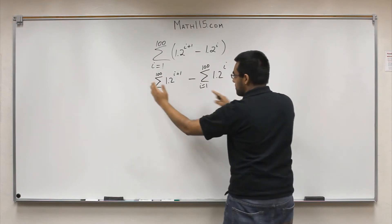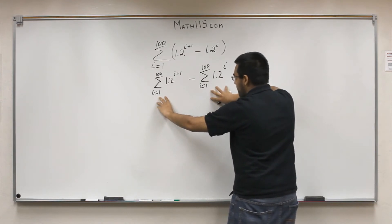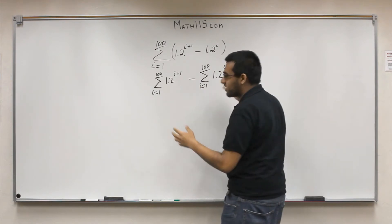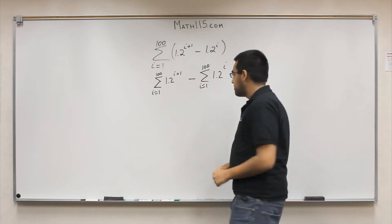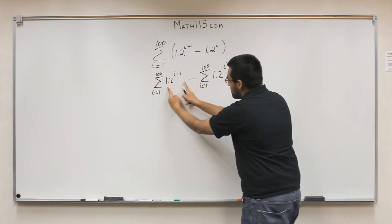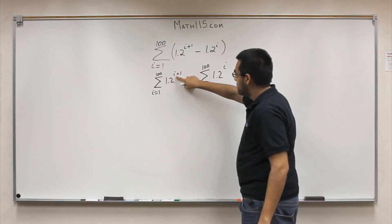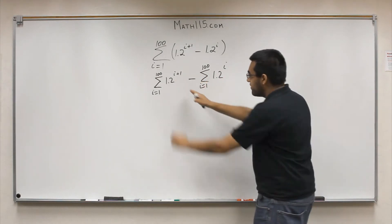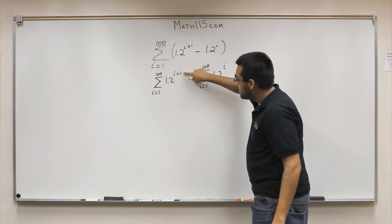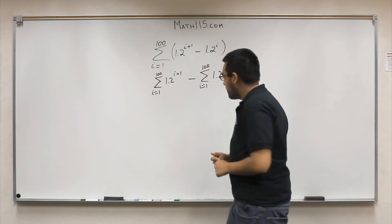There is some portion between this summation and this summation where they overlap. Since this is a minus, we know there's going to be some portion where we can just cancel out, and that'll make things a lot easier. So we have to first identify where they can cancel out. In order to do that, we need to make this expression look exactly like the other one. We identify that here we're putting a plus 1 on the variable, and here it doesn't have it. So in order to make them match, we need to subtract 1 from the exponent, which means we add 1 to the index.